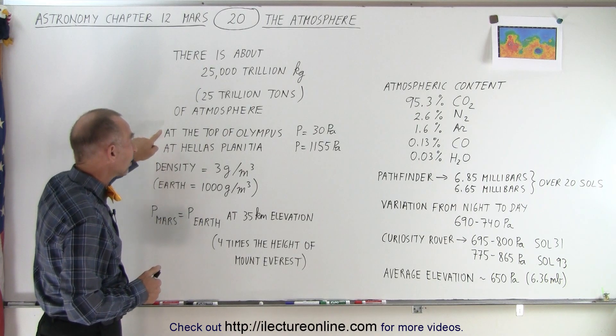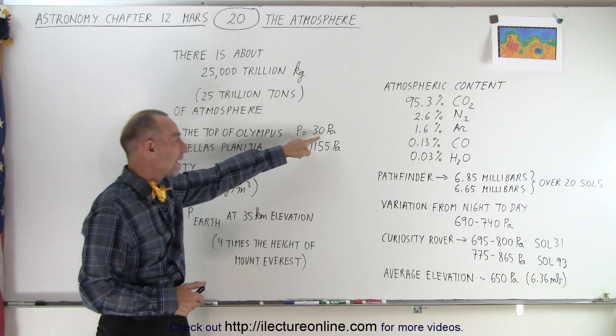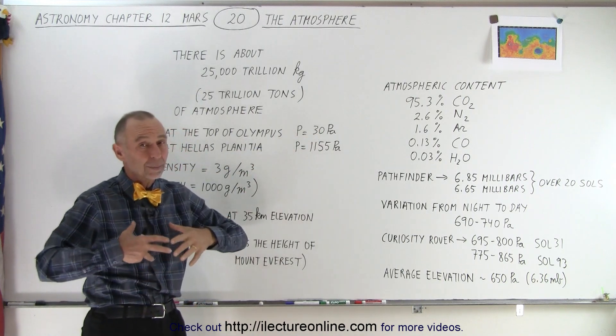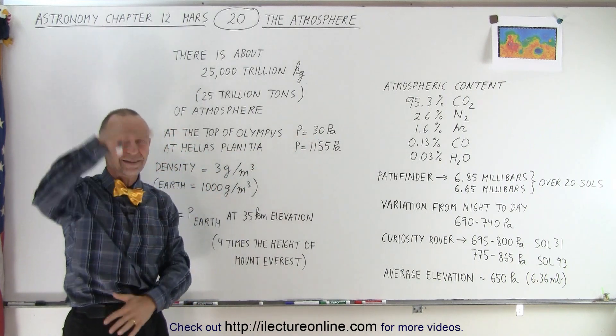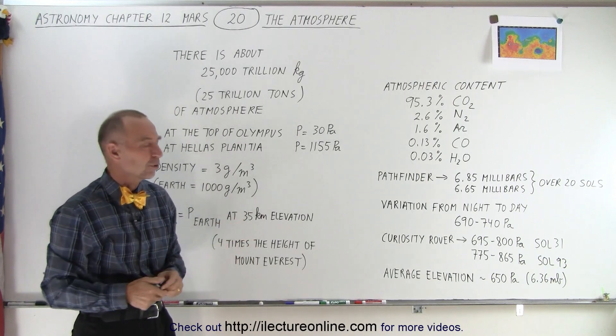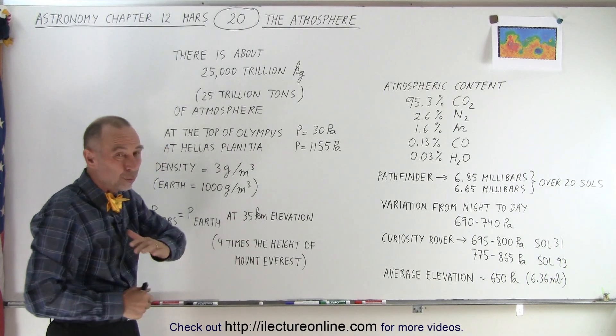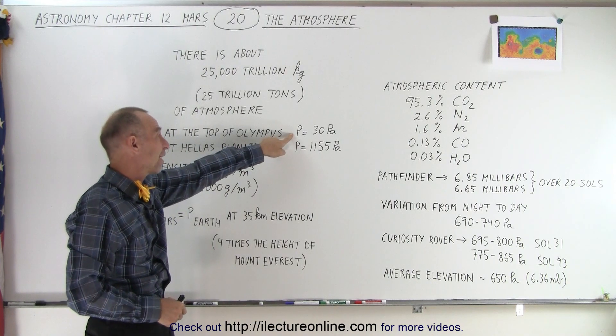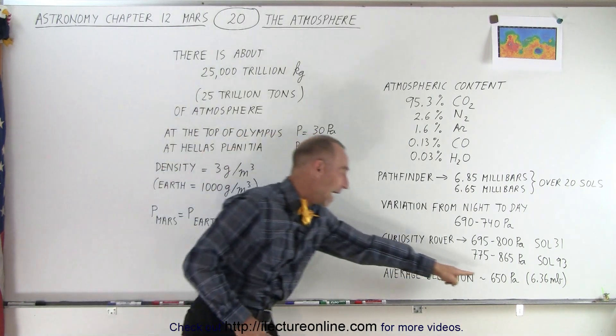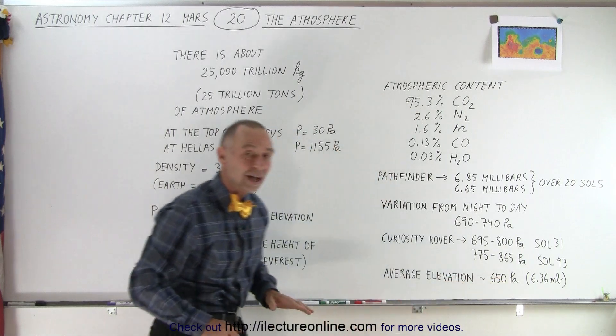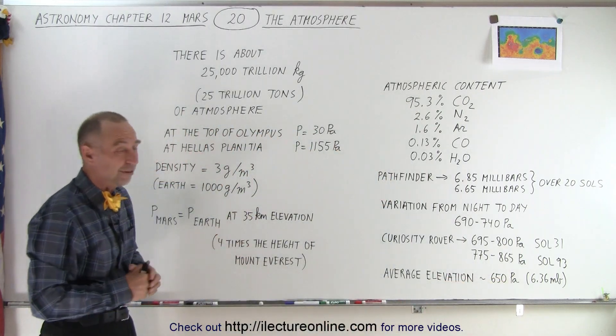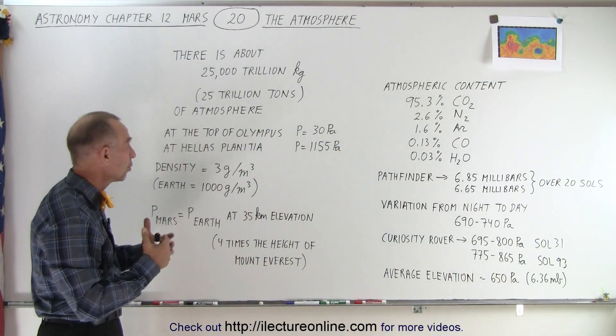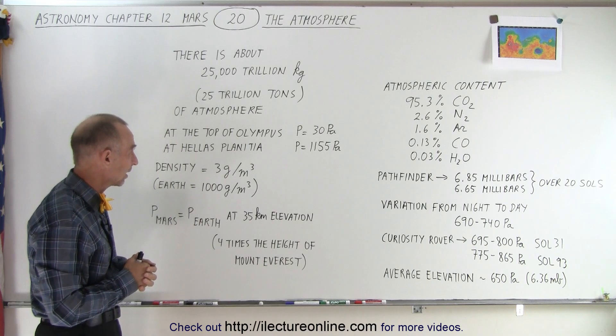At the top of Mount Olympus, the pressure is down to 30 pascals. Now, Mount Olympus is a huge mountain. It's about 16 miles tall, so that makes it about 25 kilometers, 26 kilometers tall. So it's way up there in the atmosphere at the top, and the atmospheric pressure is down to 30 pascals when the average pressure at the average height or the average elevation is 650. So there's virtually no pressure left at that elevation.